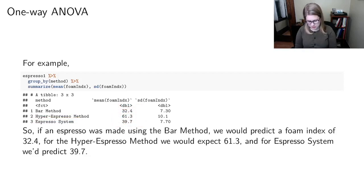And if we were going to try to do a prediction, a y-hat for an espresso made with the bar method, I would just predict that it was going to be 32.4 whatever the units of foam index are. So it wouldn't matter how hot the water was or whether I was making a latte or an Americano. The only thing that matters is the method that was used to make the espresso and we would expect it to be 32.4 foam score. And then if we made it using the hyper espresso method our prediction would be 61.3 for all those espressos and for the ones made with espresso system we'd predict 39.7.